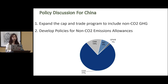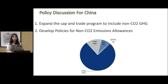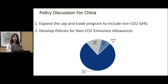I have some policy suggestions for China. First, China should expand the cap and trade program to include non-CO2 greenhouse gases — for example, the cement industry should be given targets for both carbon dioxide and non-carbon dioxide greenhouse gases. Second, China should develop and implement a policy for determining and distributing allowances. This policy should be based on a comprehensive assessment of emissions from different sectors and should also consider factors such as economic growth, industry structure, and so on.